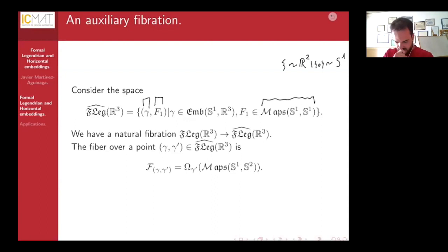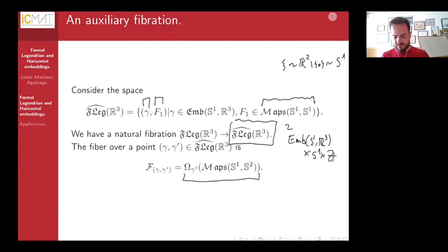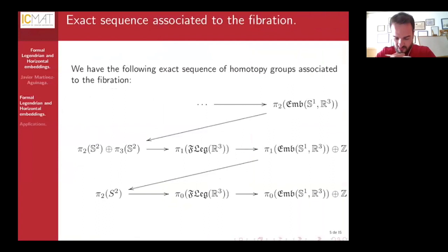The base of the fibration is well understood: it has the homotopy type of embeddings from S¹ to ℝ³ times maps from S¹ to S¹. The fiber is also well understood, and the homotopy groups can be described in terms of the homotopy groups of S². The long exact sequence of homotopy groups associated to this fibration then gives computable results.